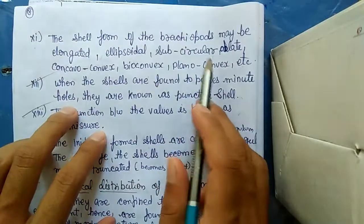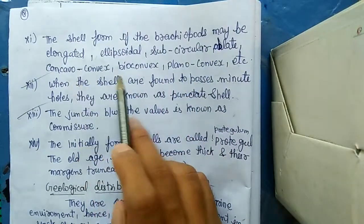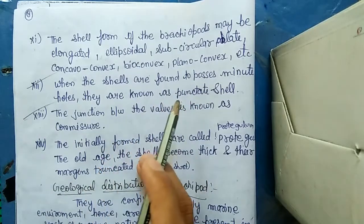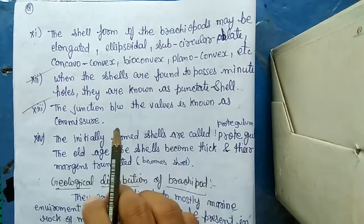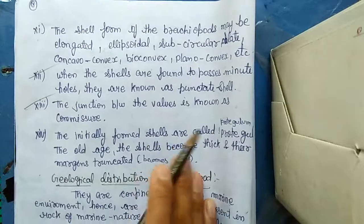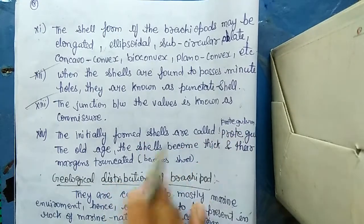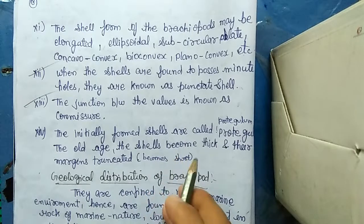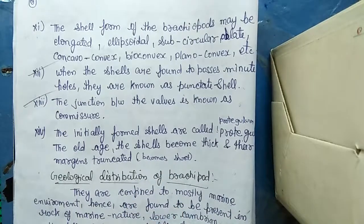The shell form of brachiopods may be elongated, ellipsoidal, sub-circular, oblate, concave, convex, biconvex, plano-convex, etc. When the shells possess minute holes they are known as punctate shells. The junction between the valves is known as the commissure. The initially formed shells are called the protegulum. With older age, shells become thicker and their margins become truncated.